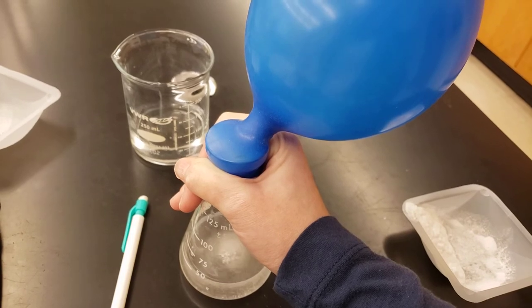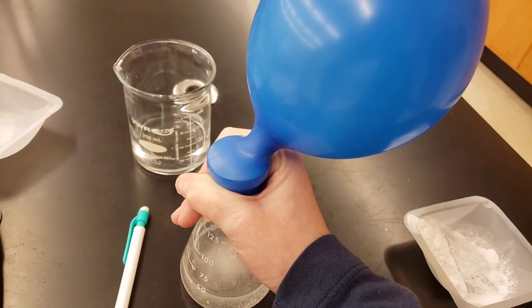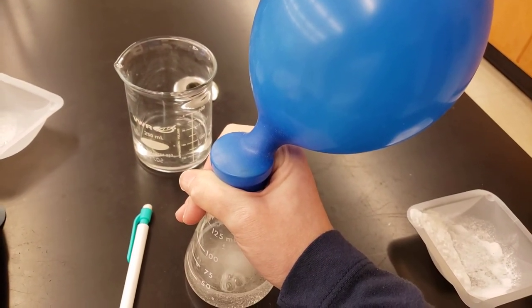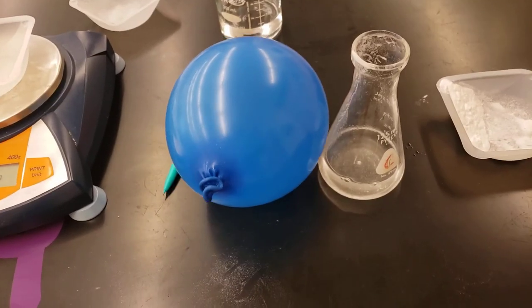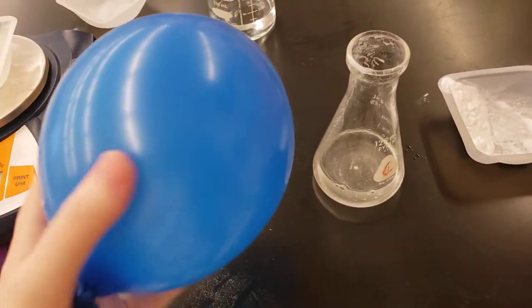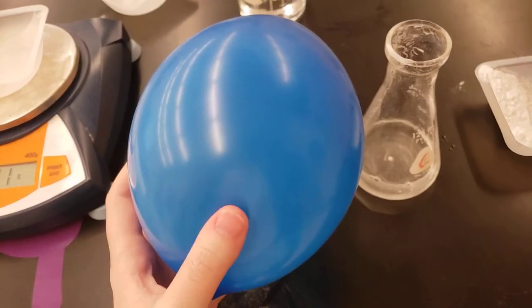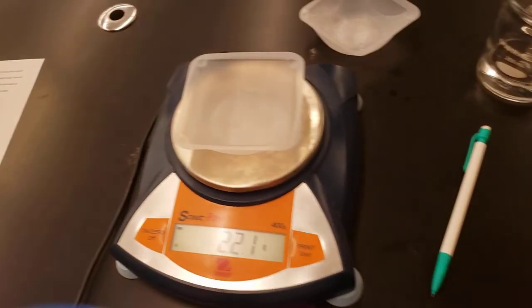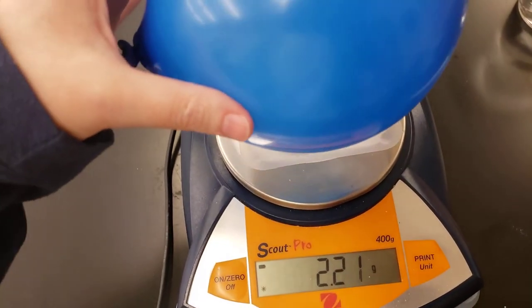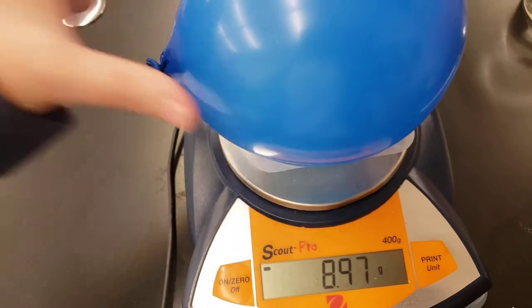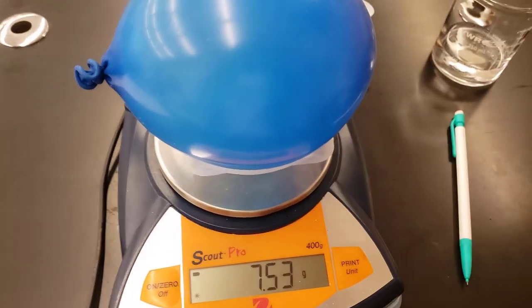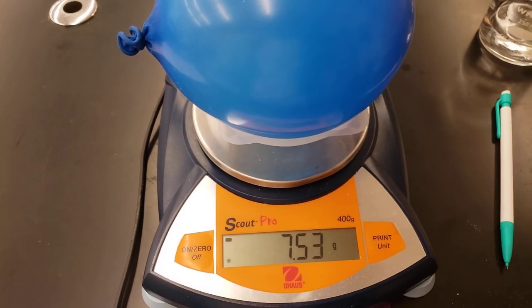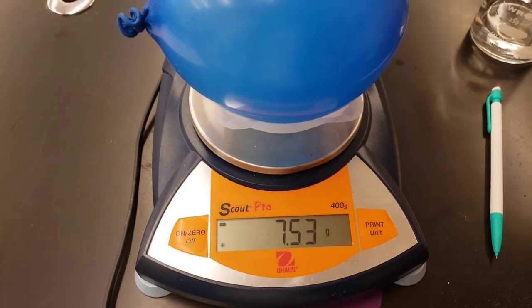All right now that my reaction has stopped I'm going to carefully pull my balloon off the Erlenmeyer flask and tie it off. So I've tied off my balloon full of the carbon dioxide that my reaction produced. And I'm going to go put it back on that weigh boat from before. And I'm going to record that as my mass of the weigh boat plus balloon plus carbon dioxide.